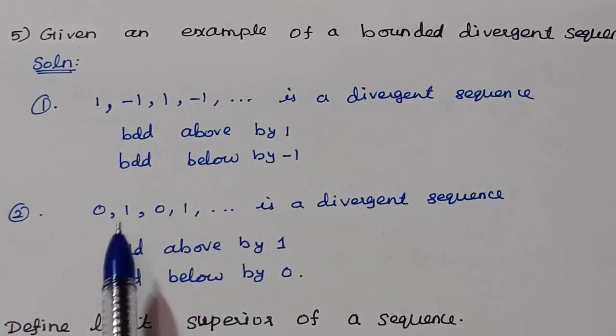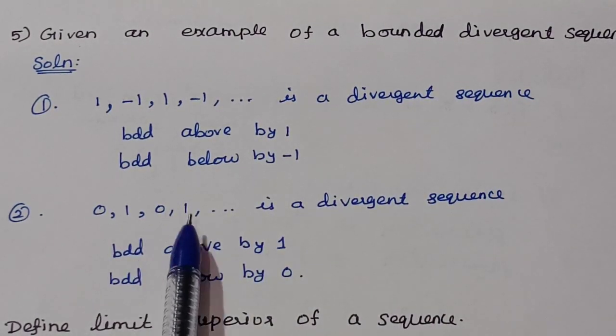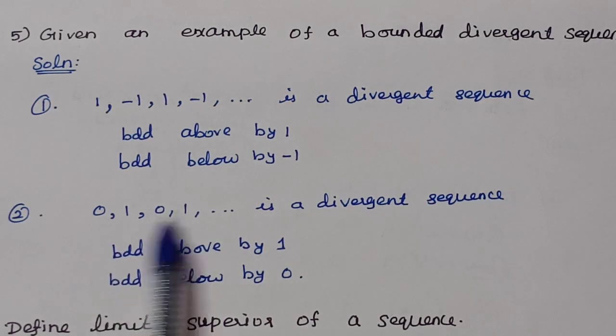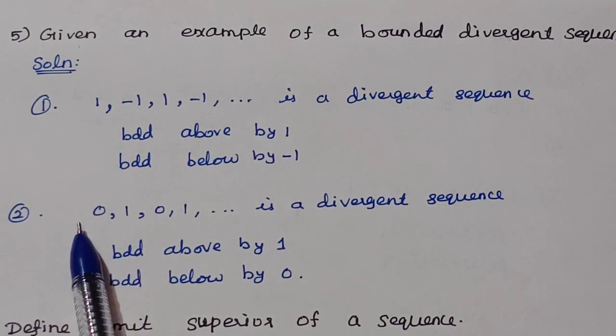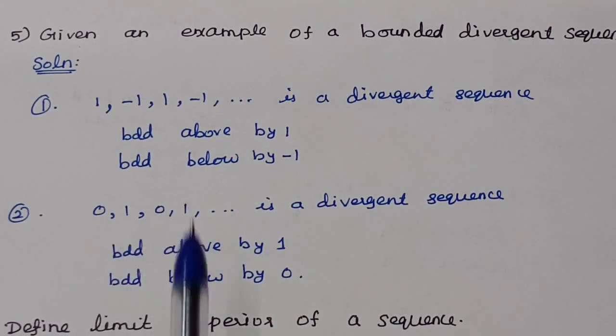A bounded divergent sequence example is: 0, 1, 0, 1, … This is bounded above by 1 and below by 0, so it is bounded. It oscillates and does not converge, giving us two examples of bounded divergent behavior.